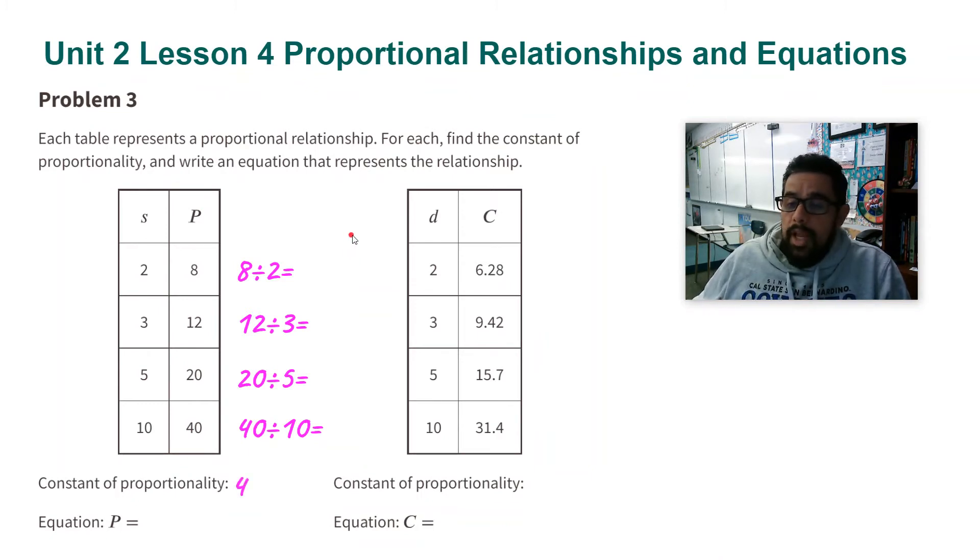So the constant of proportionality is four. Now the equation, what am I doing in the equation? I'm taking four and I multiply these numbers. These numbers are S. And when I do that, I get these numbers P. So that's why my equation is P equals four times S.